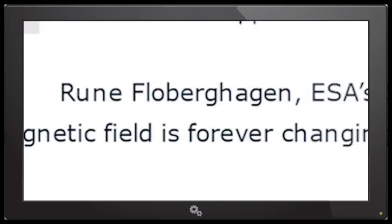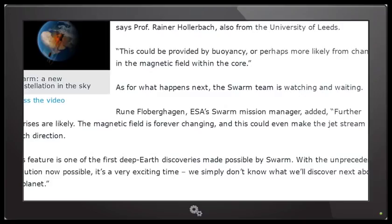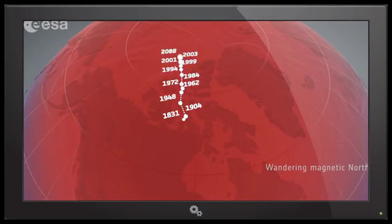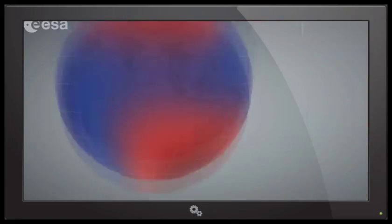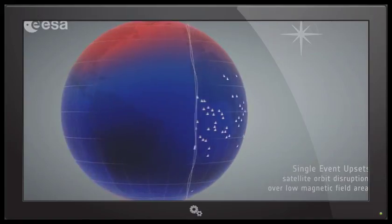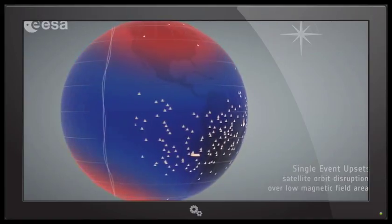Rune Floberghagen. Sorry, Rune, I don't want to ruin your last name's pronunciation. ESA's Swarm mission manager added, further surprises are likely. The magnetic field is forever changing, and this could even make the jet stream switch direction. Unrelated side note, sometimes I repeat the most important information multiple times. This could also make the jet stream switch direction.